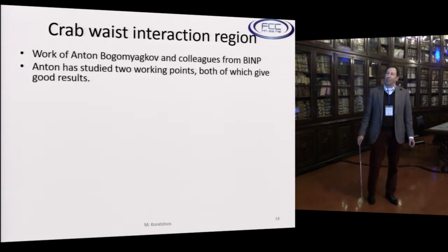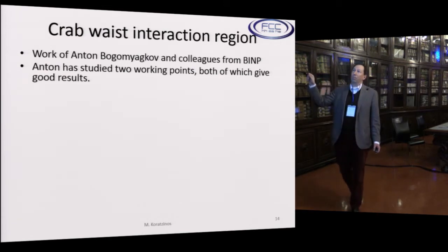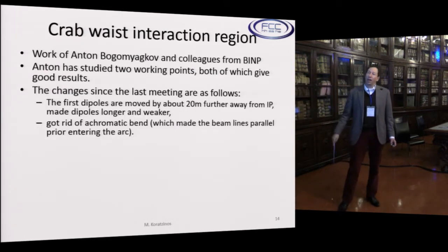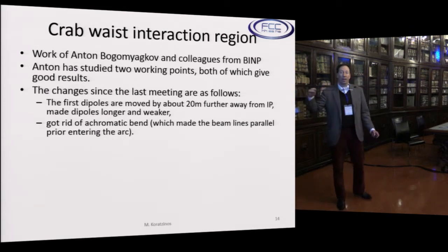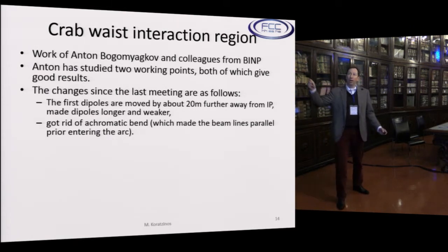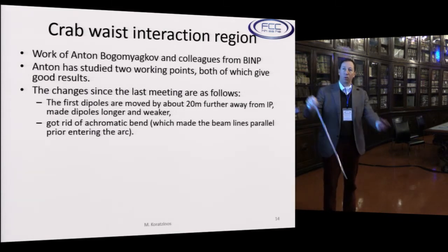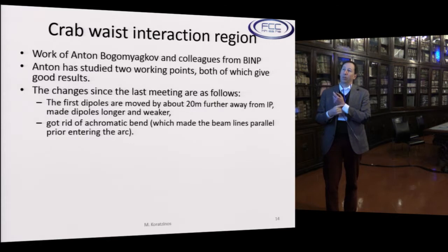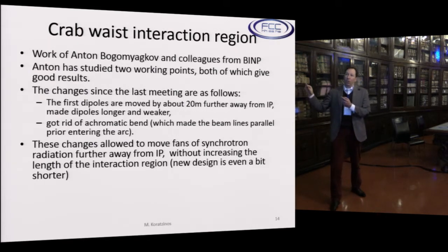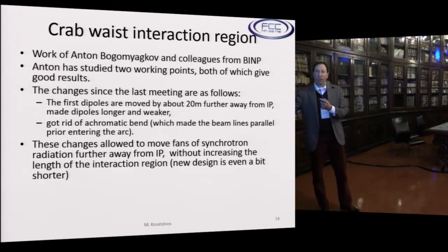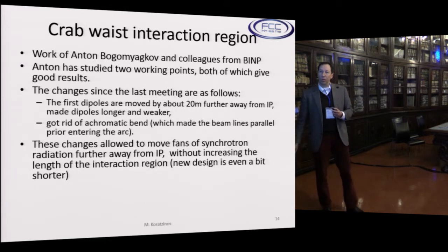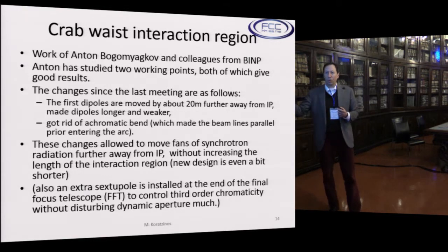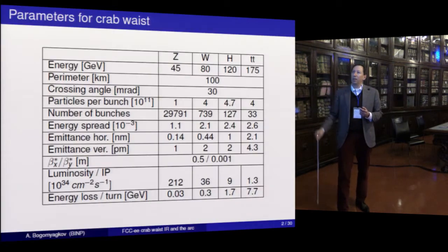This is the work of Anton. He has studied two working points, both of which give good results. The changes since the last meeting are: he moved the first dipoles about 20 meters further away from the IP, making the dipoles longer and weaker, which improves the synchrotron radiation power lost in that area. He got rid of the achromatic second bend which made the beam line parallel. These changes have allowed moving the fans of synchrotron radiation further away from the IP without increasing the length of the interaction region beyond 800 meters. He also installed an extra sextupole to control the third-order chromaticity.